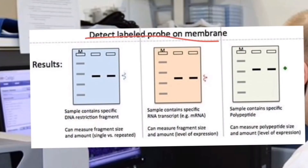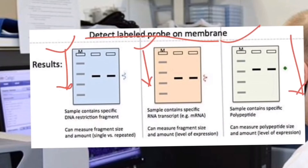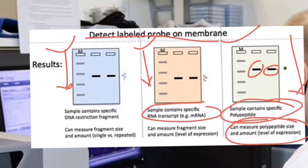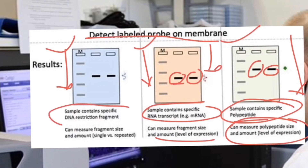You can detect specific macromolecules — DNA, RNA, or proteins — after running them in an agarose gel-based method. Western blotting is a very specific method where you separate your protein bands according to shape and size, identifying particular polypeptide chains and measuring their expression levels via color banding. Similarly, for RNA, you can measure the expression level of specific mRNA transcripts by identifying bands according to their size when run in a gel, similar to DNA.